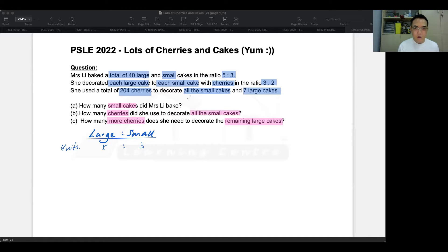Since the total is 40 cakes, then the 40 cakes is made up of a total of five plus three, eight units. So if there are 40 cakes, and it's eight units, then one unit should be five cakes. So the next thing to do is to multiply each of them by five. When I multiply this by five, I am now changing it from units into the actual number of cakes.